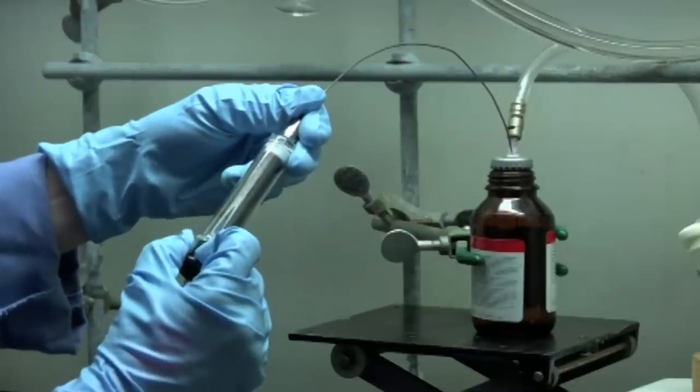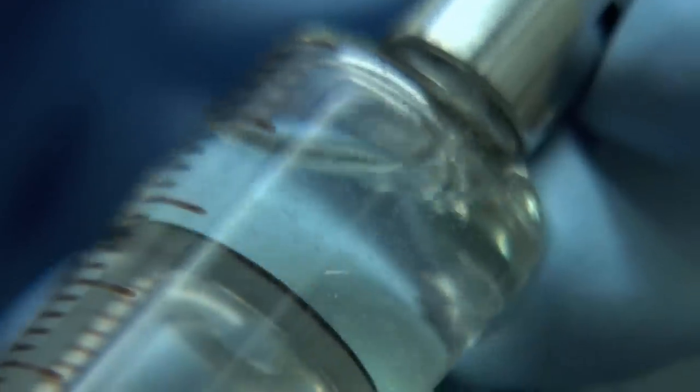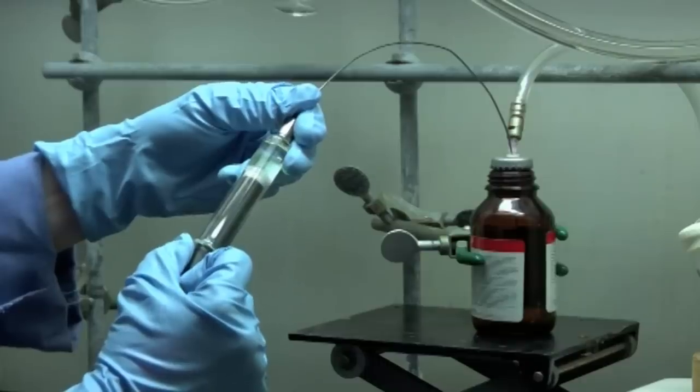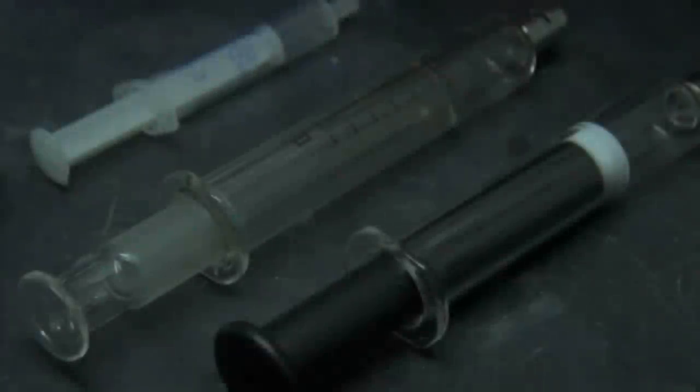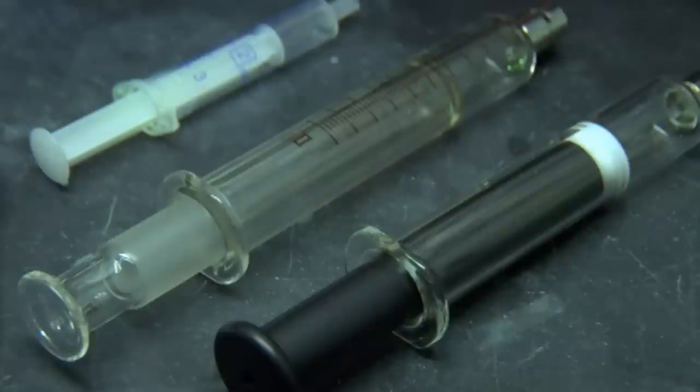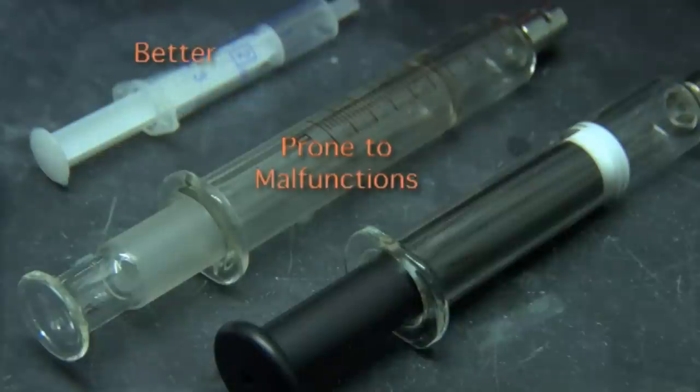Gently pull the plunger to draw liquid into the syringe. Pulling too hard or too fast can cause air bubbles to enter between the plunger and the syringe body. Also note that simple glass syringes are more prone to causing gas bubbles. Disposable plastic syringes have a good seal on the plunger and work well, but glass syringes with Teflon tip plungers are best.